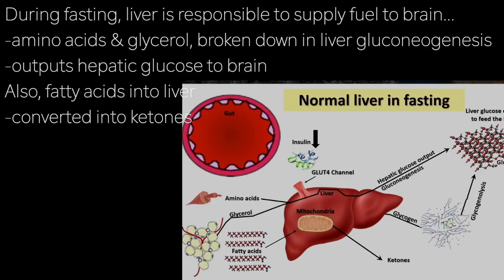Now, let's turn to how the liver interfaces with food. In the setting of fasting, the liver is charged with the main responsibility of supplying the brain with fuel. Our brain refuses to fast — it needs a certain amount of fuel all the time. So amino acids from muscle breakdown and glycerol from fat breakdown are converted in the liver through a process called gluconeogenesis to provide what is called hepatic glucose output for the brain.